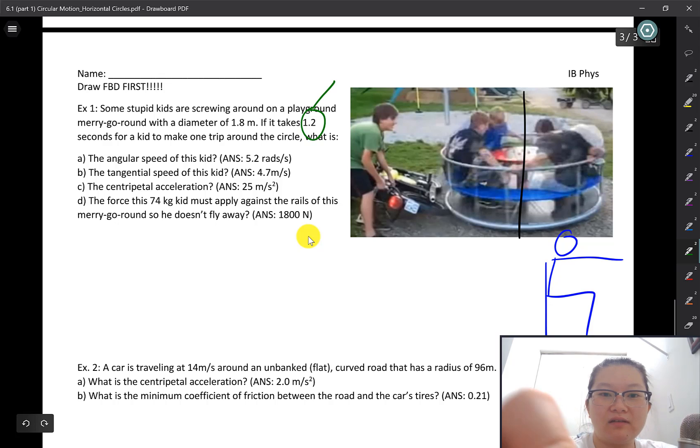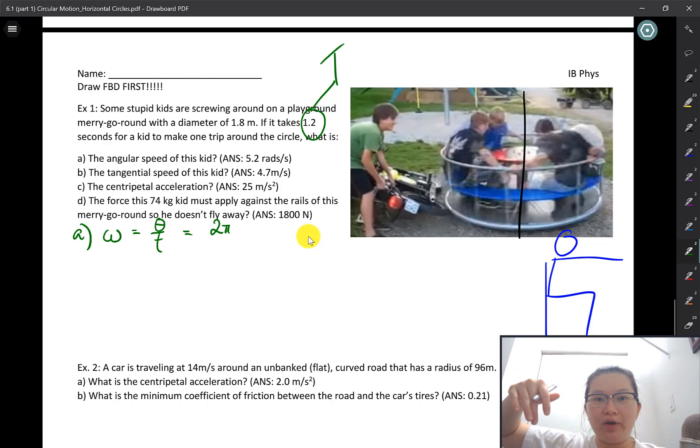What is the angular speed of this kid? We're gonna start off with part A. Angular speed, which we use omega to show, is the radians covered over the amount of time used to cover that amount. If this kid made one complete circle around, the number of radians, we use radians not degrees, if that's 360 degrees, for radians that is 2π. So he covered one exact circle, 2π, in how long? In 1.2 seconds. The time that it took him to cover that is the time.